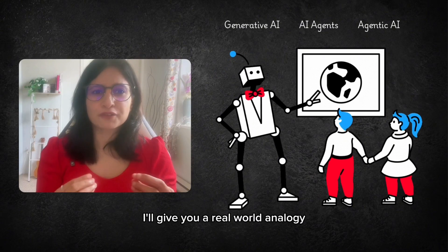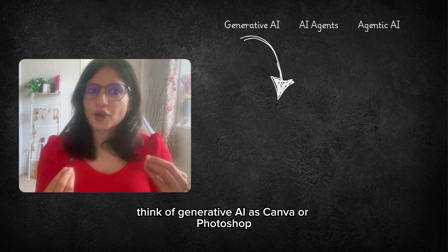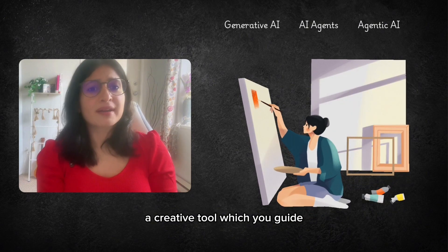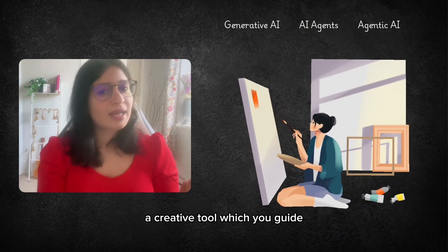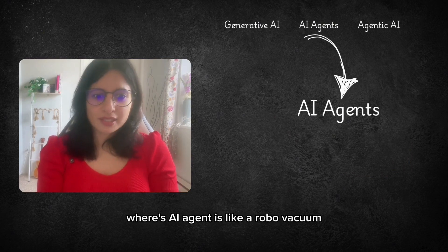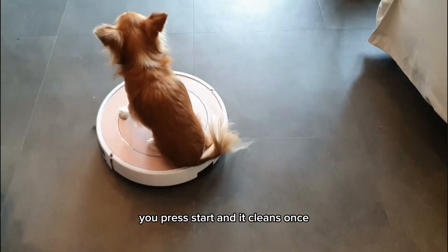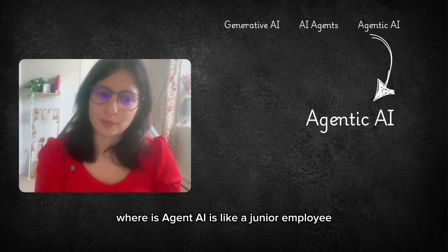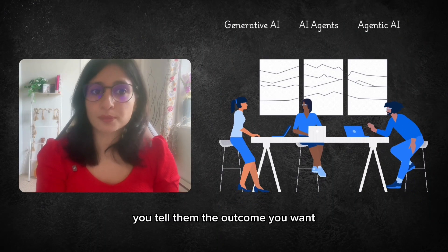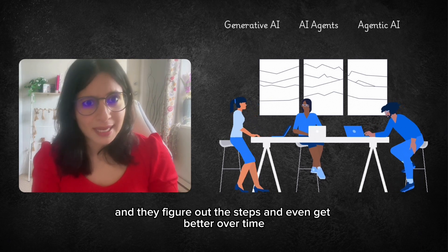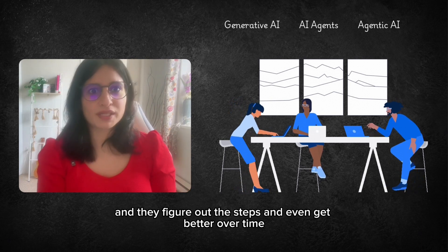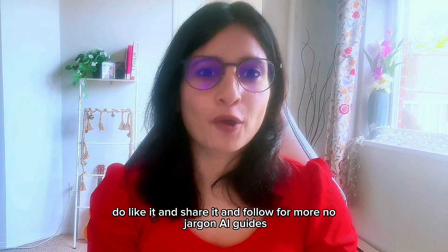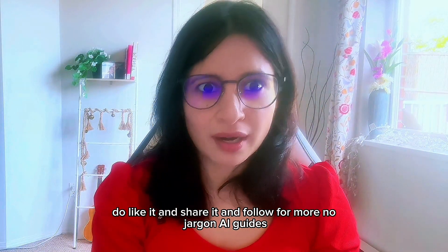So to explain the differences I'll give you a real world analogy. Think of Generative AI as Canva or Photoshop, a creative tool which you guide. Whereas AI agent is like a robo vacuum. You press start and it cleans once. Whereas Agentic AI is like a junior employee. You tell them the outcome you want and they figure out the steps and even get better over time. If this breakdown helped do like it and share it and follow for more no jargon AI guides.